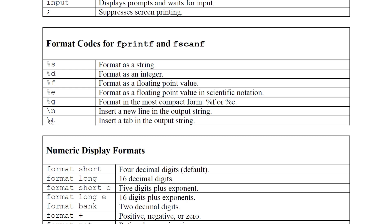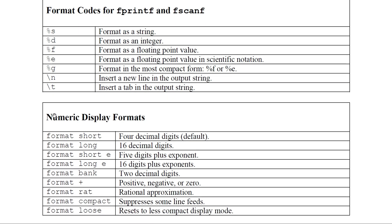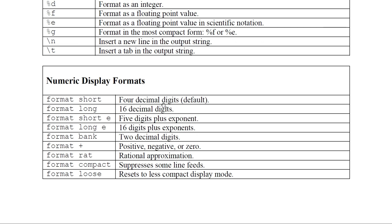Display formats: format short shows 4 decimal digits; format long shows 16 decimal digits; format short e gives 5 digits plus exponent; format long e gives 16 digits plus exponent; format bank shows 2 decimal digits; format plus indicates positive, negative, or zero; format rat gives rational approximation; format compact suppresses extra line feeds; format loose resets to a less compact display.